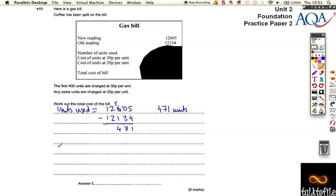So if we do the first 400 of this 471, it's charged at 30p a unit. Let's do 4 times 3. 4 times 3 is 12, and then we're just going to add on the three zeros. So it's 12000p, which we've got to convert to pounds, so divide by 100, which is 120 pounds.